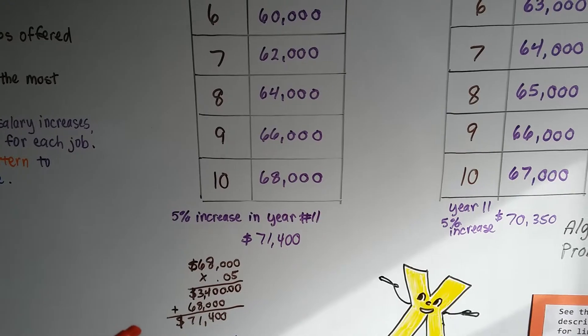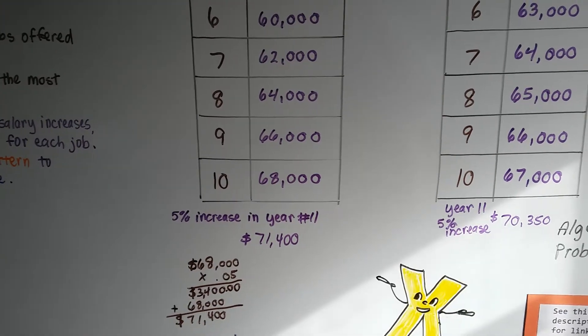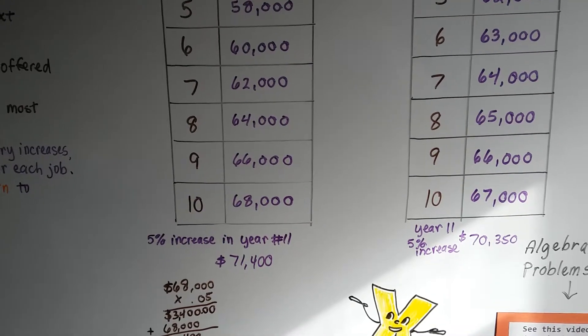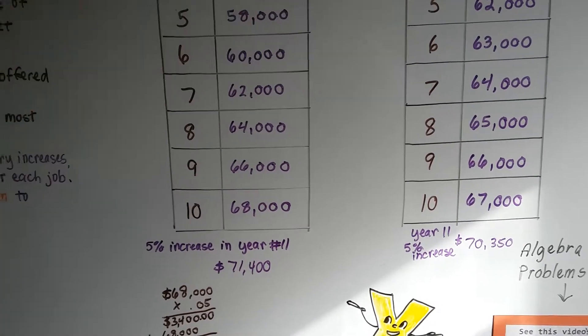And if we wanted to add 5% to that one, we multiply this number to the .05, see? And we just keep doing it and doing it. So now, which job do you think she should take, A or B?